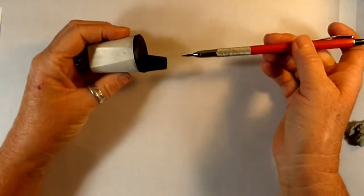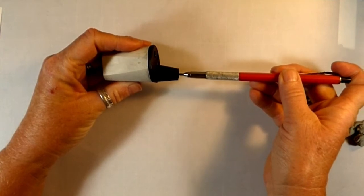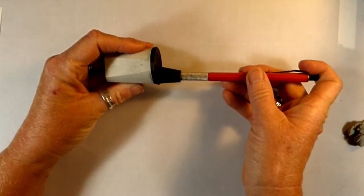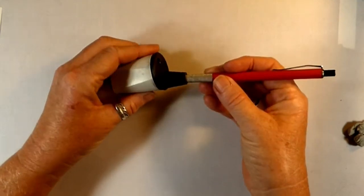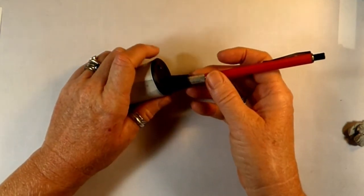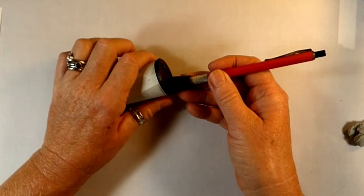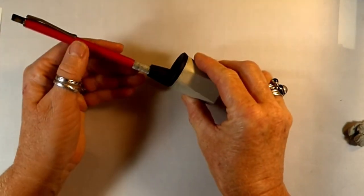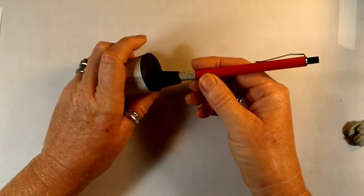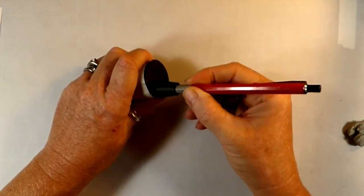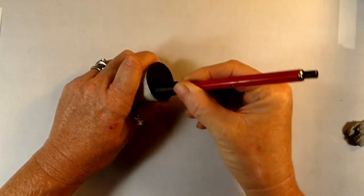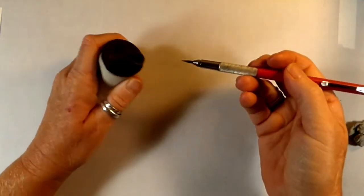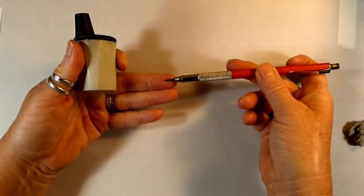So what I'm doing is I'm placing the pencil in, the holder goes in the shaft, and as soon as you find this is comfortable, you're then going to, with your left hand, or if you're right-handed or left-handed, you would switch it this way. And you're going to rotate this, and this will give you a beautiful point.